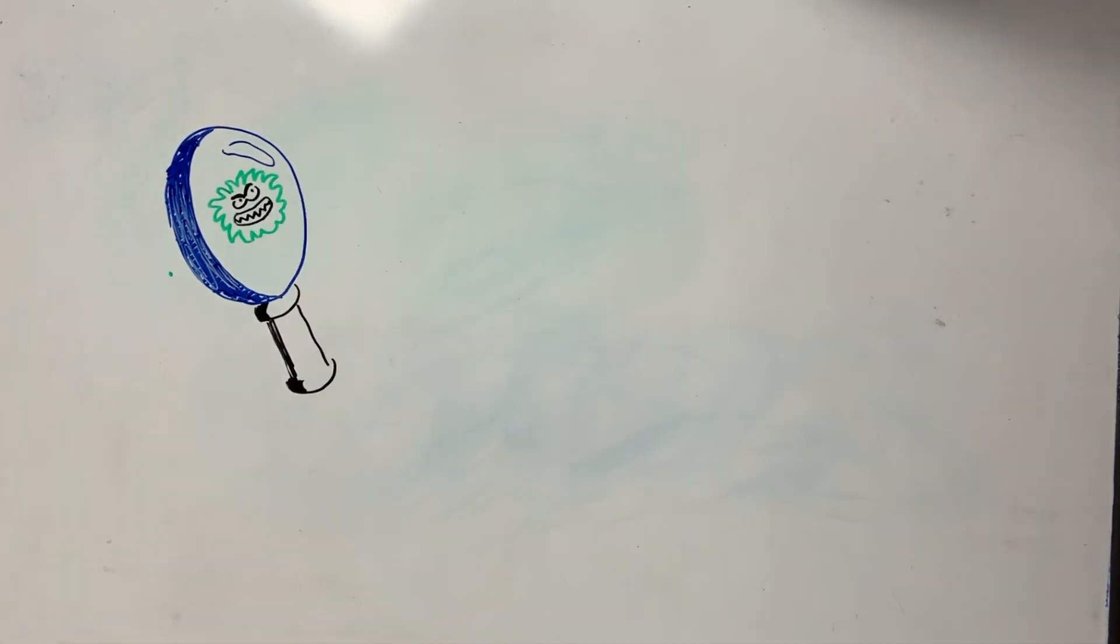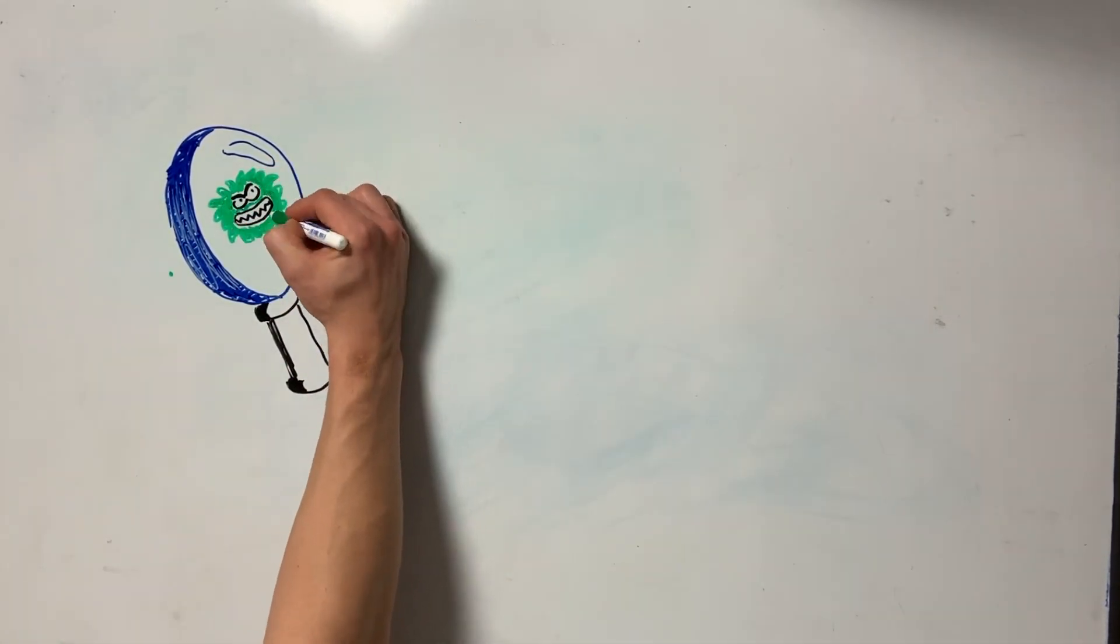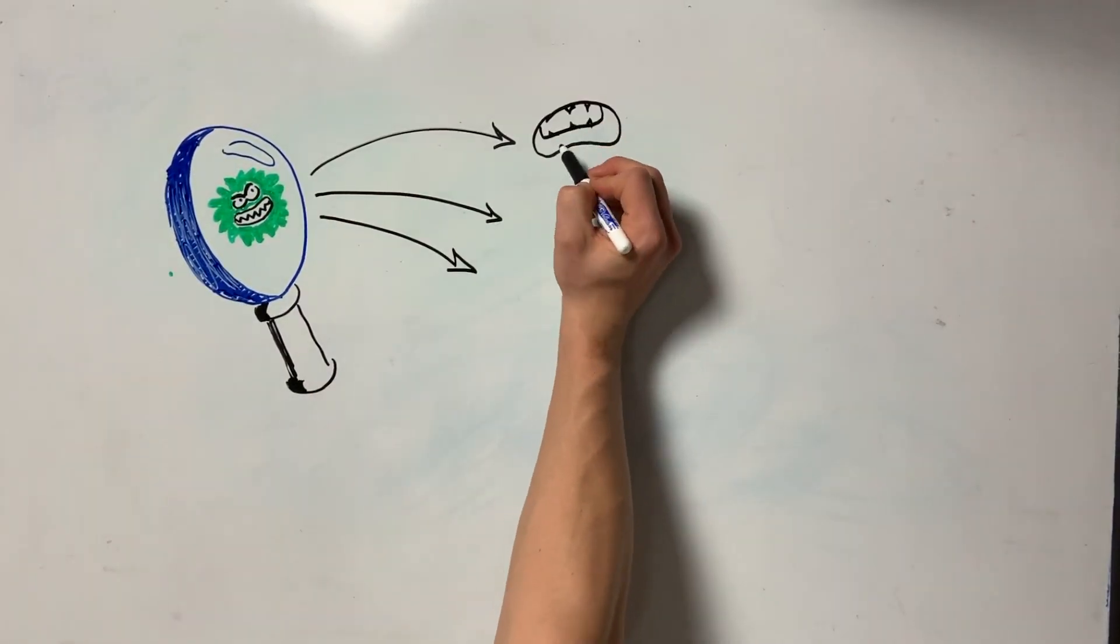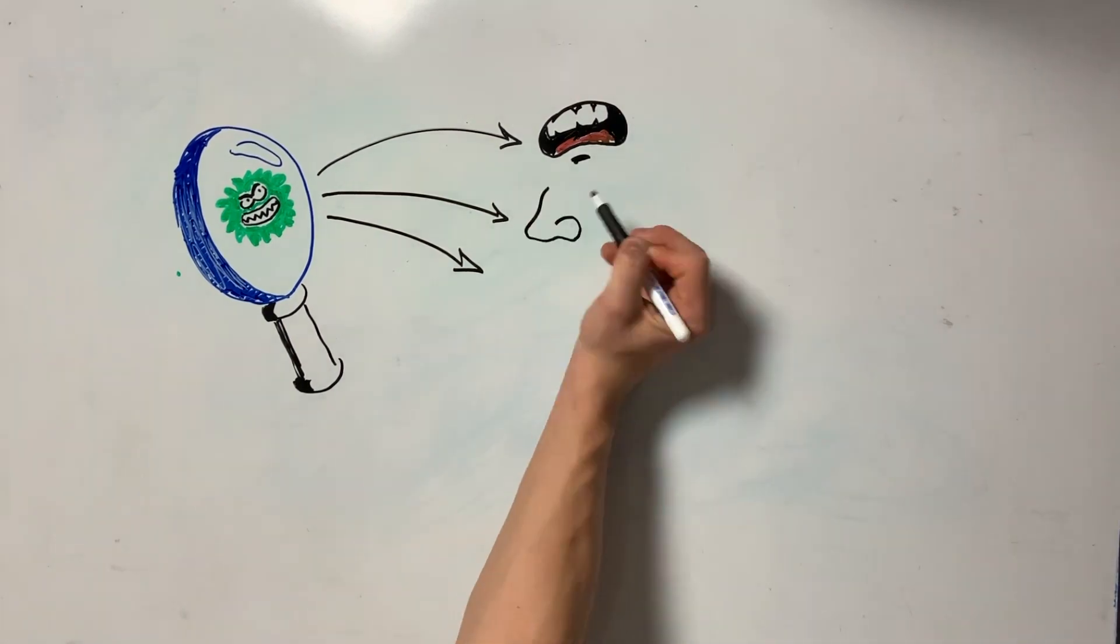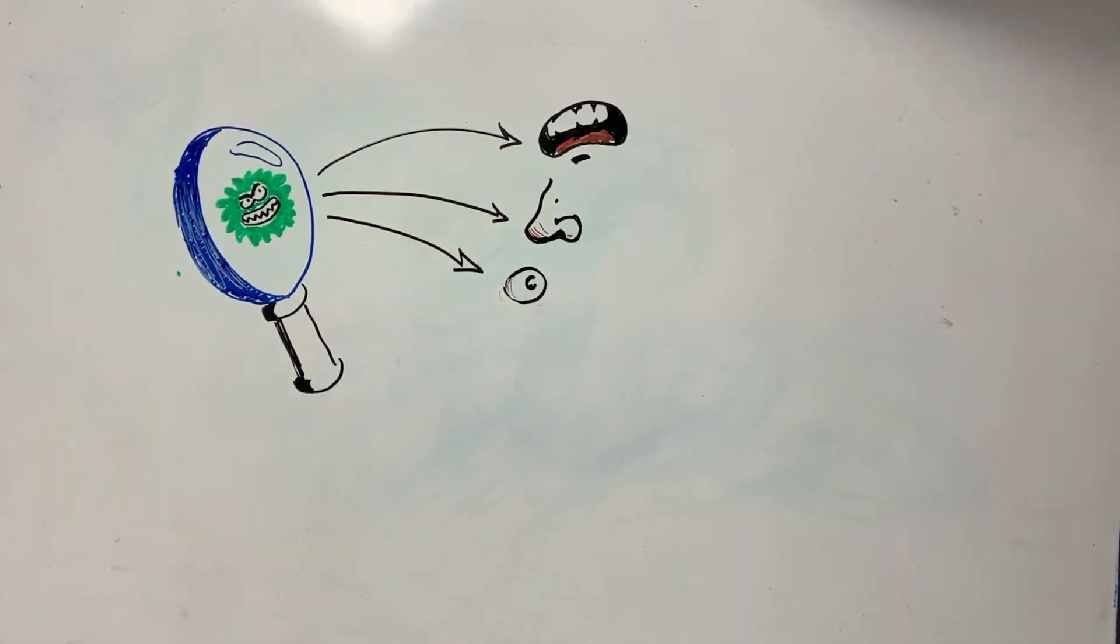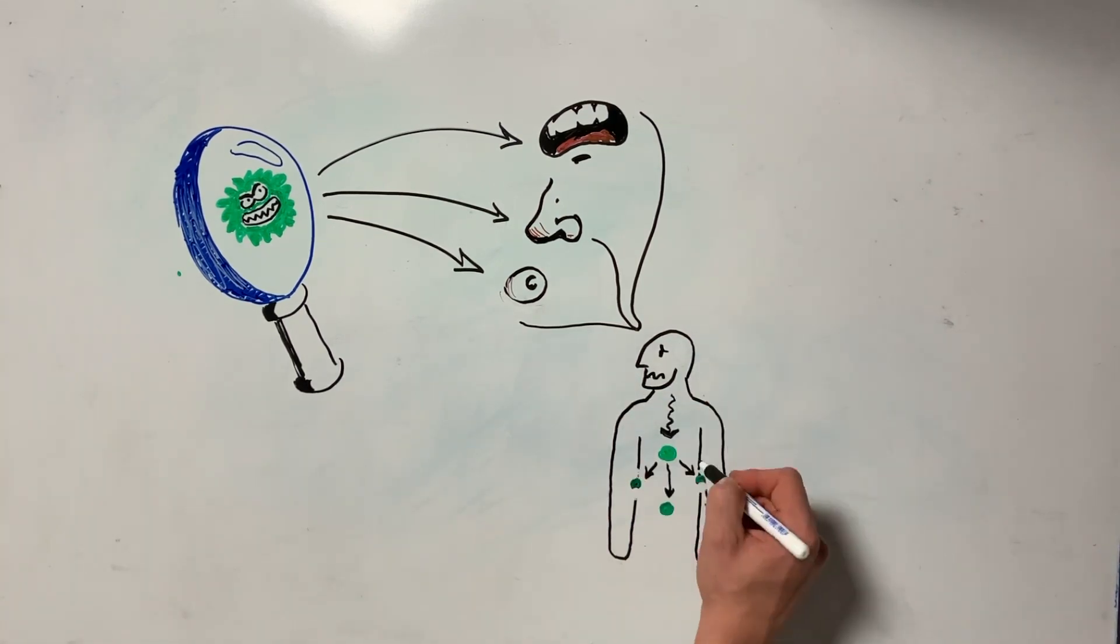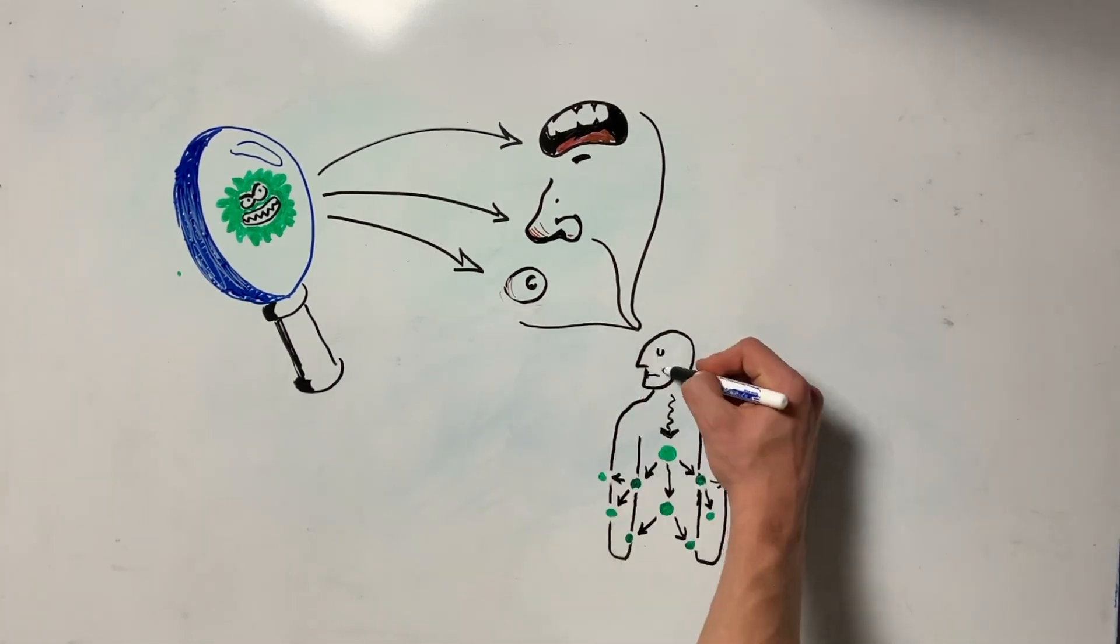It's a virus. What's a virus? A virus is a tiny, tiny, tiny organism that can get into your body through your mouth, nose, or eyes. Once inside your body, it multiplies and it makes you feel sick.